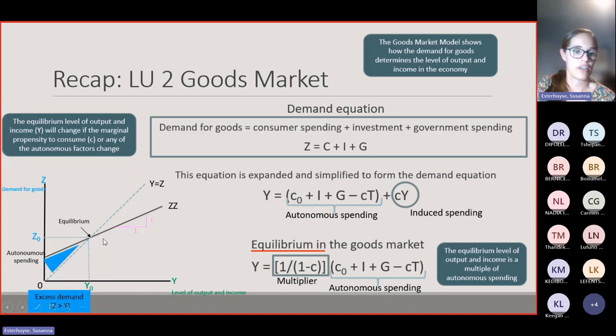On this portion you have excess demand, and on this area you have excess supply. The economy will correct itself by moving towards the equilibrium point. This was the gist of Learning Unit 2, the goods market.